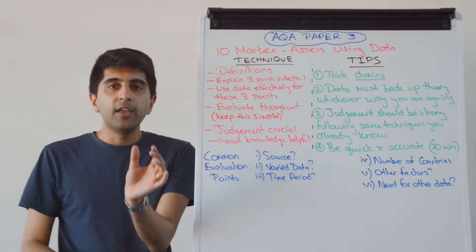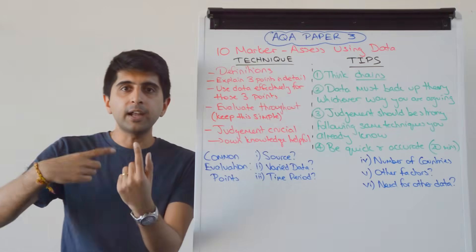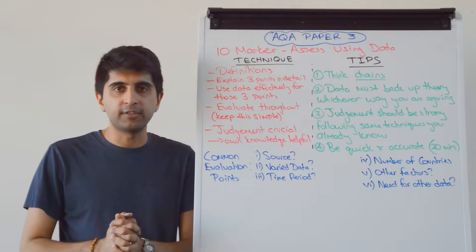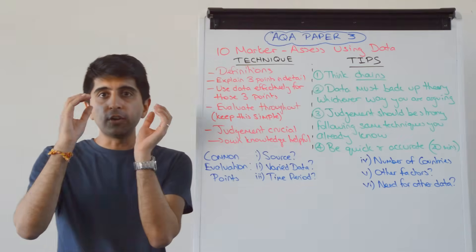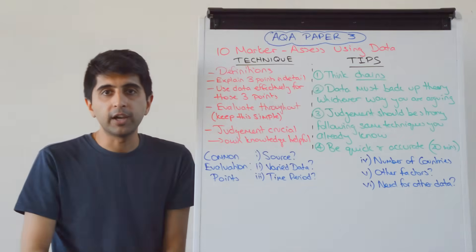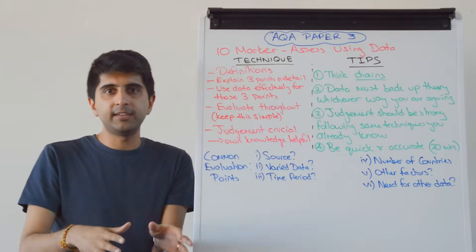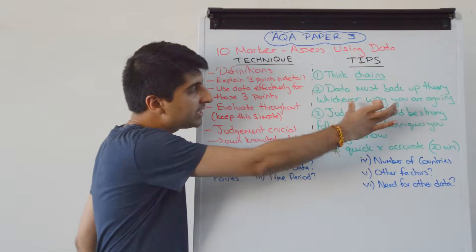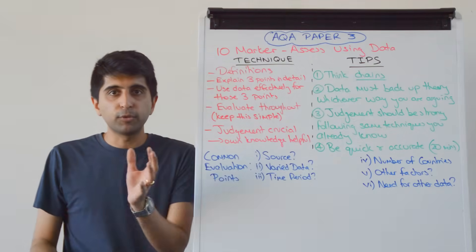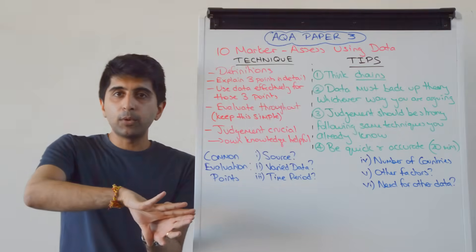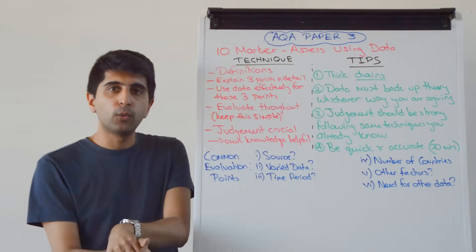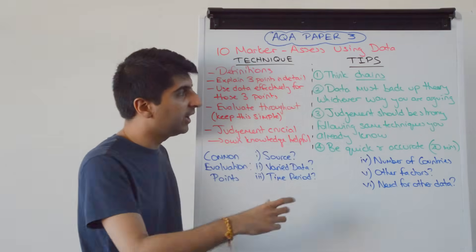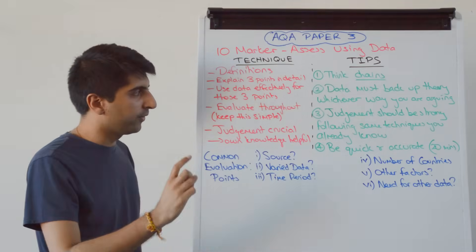A key tip: the points you make could be on either side of the debate. If the question is about assessing the impact of monetary policy on growth, one point could be showing how it's worked, and another could be using data that shows it hasn't worked, going through the theory why. The data you use has got to back up your theory, whether it supports or goes against what the question is saying.